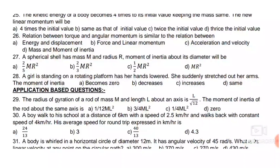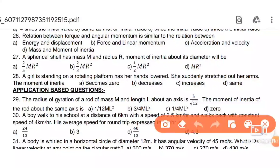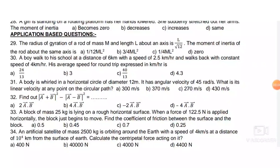Next: a girl standing on a rotating platform stretches her hands outward. This increases the moment of inertia. So option C — increase — is correct.